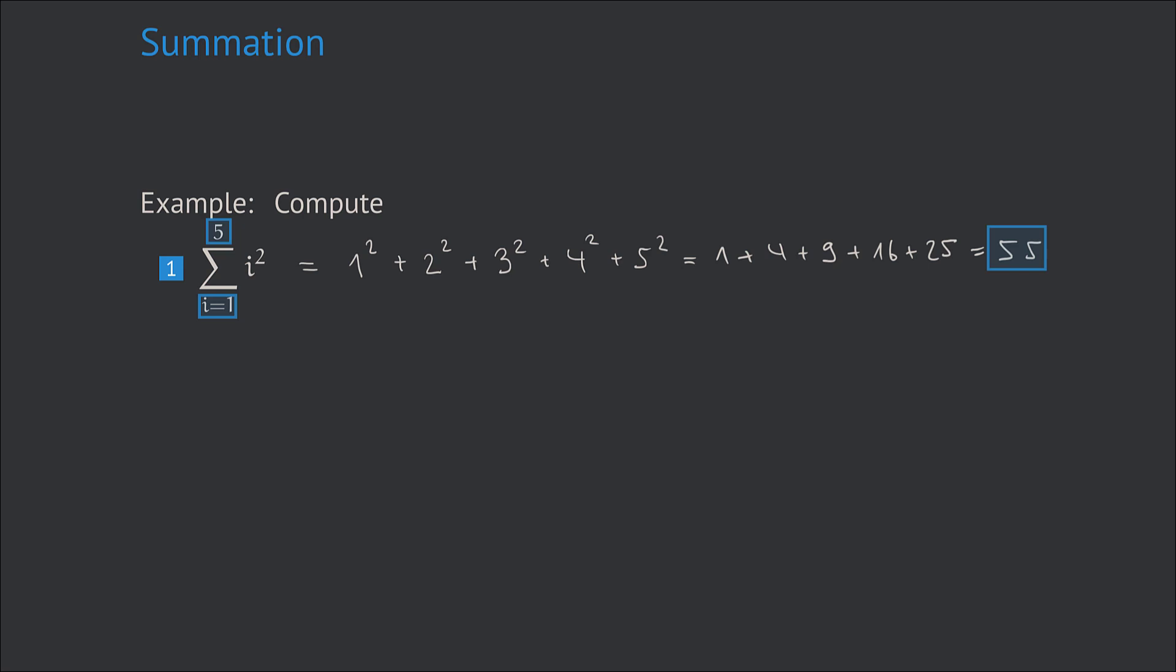Let's have a look at another example. In this case the expression 5k minus 3 has to be summed up where k is the summation index running from 3 to 6. So in this case we have to write down the expression 5k minus 3 for altogether four times where k runs through 3 to 6.